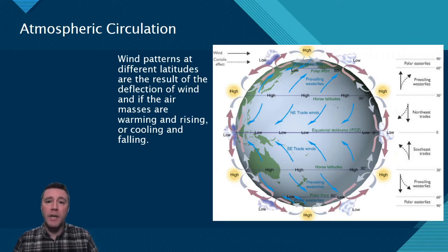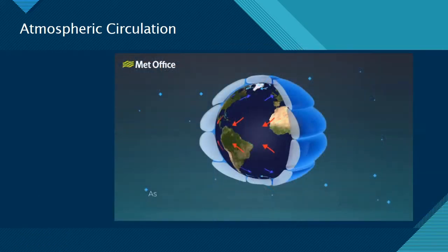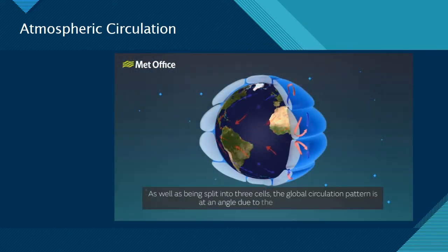Let's now take a look at a video produced by the British Meteorological Office that will help to illustrate these atmospheric patterns. As well as being split into three cells, the global circulation pattern is at an angle due to the Earth's rotation.